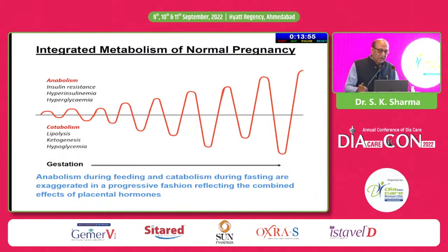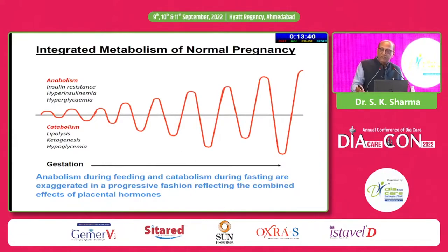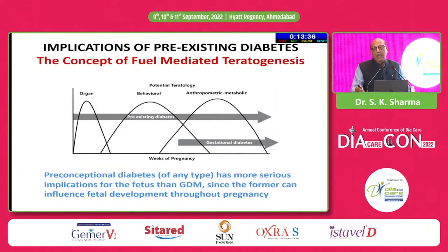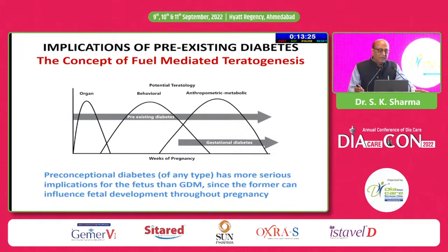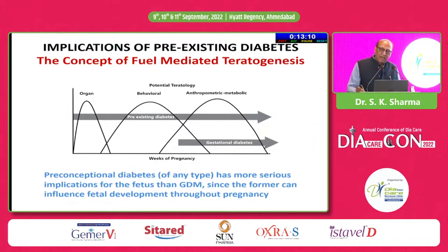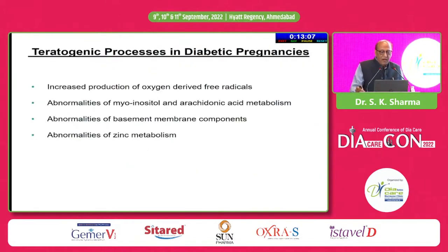As pregnancy is progressing, there is excessive anabolism during feeding and catabolism during fasting, which are exacerbated and progressively increasing until delivery. If you compare GDM to pregnancy in a lady who is already diabetic, you find that right from the beginning of conception there is a hyperglycemic burden. Organogenesis occurring in the first 8 to 10 weeks is affected, as compared to GDM where it develops after the second half of pregnancy and organogenesis has already taken place. So congenital malformations are not seen in GDM as compared to a pre-existing diabetic patient who is now pregnant.